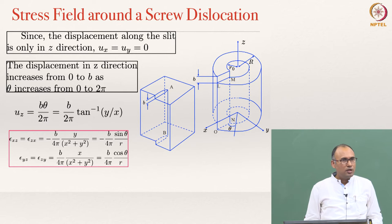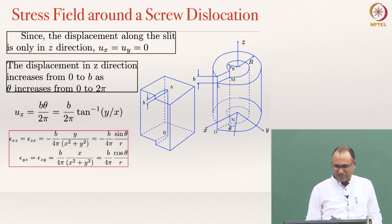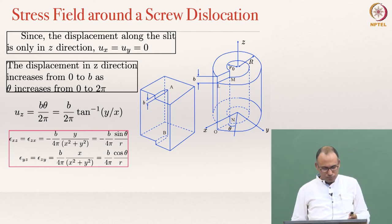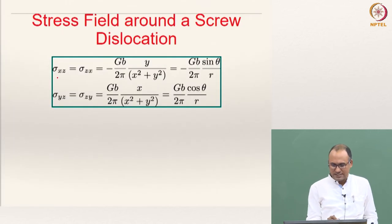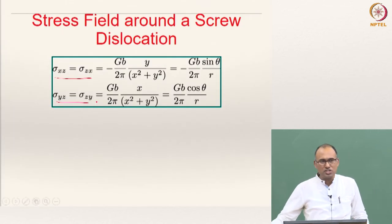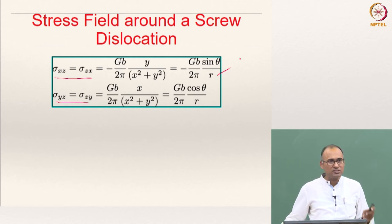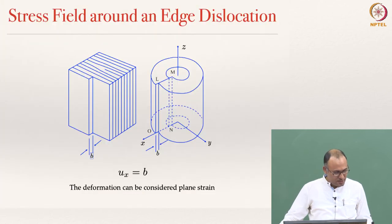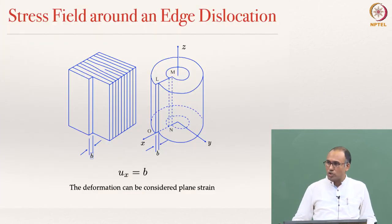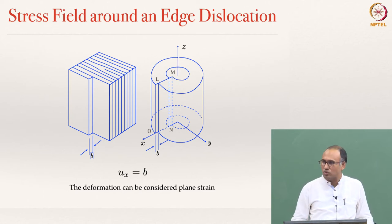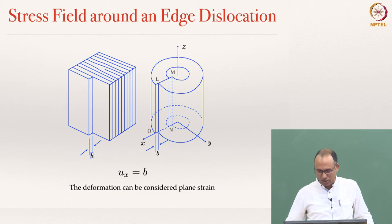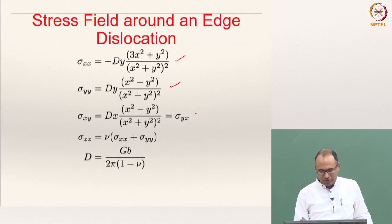The strain components will only be ε_xz and ε_yz, and the shear stresses around the screw dislocation are given by those components — meaning a screw dislocation will only cause shear stresses. For an edge dislocation, displacement is only in the y direction, and you can write expressions for u_x and u_y, from which you derive σ_xx, σ_yy, and σ_xy.